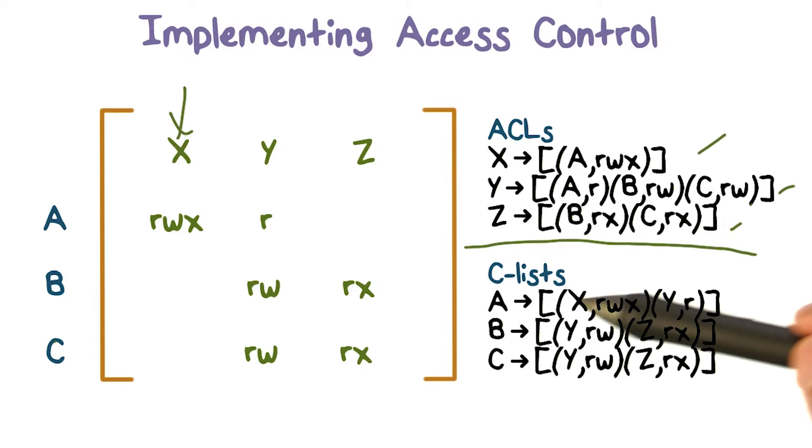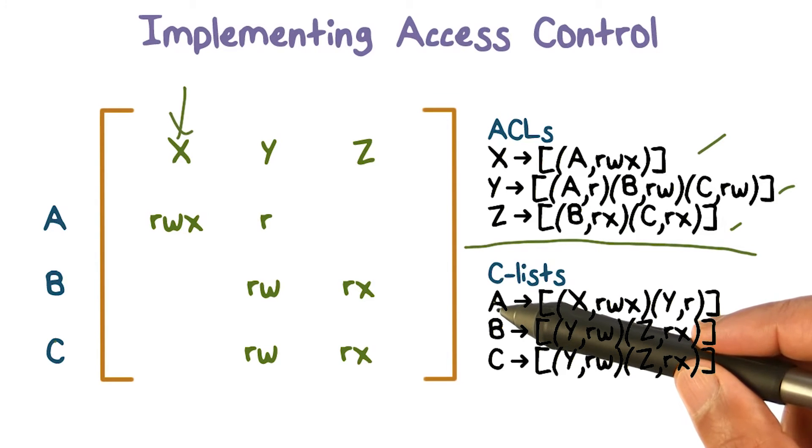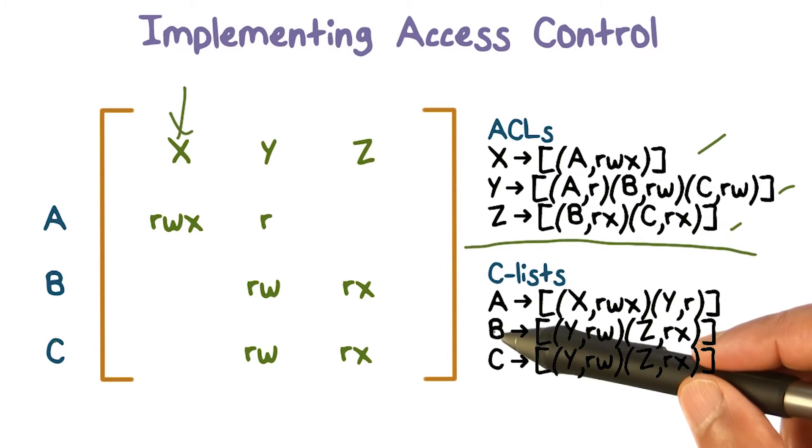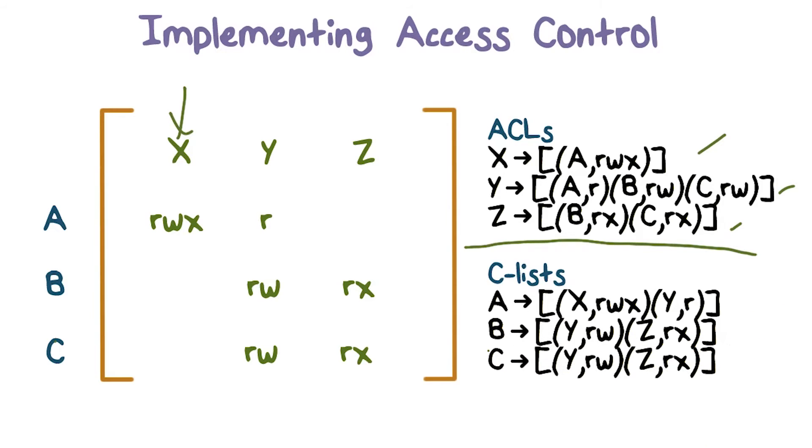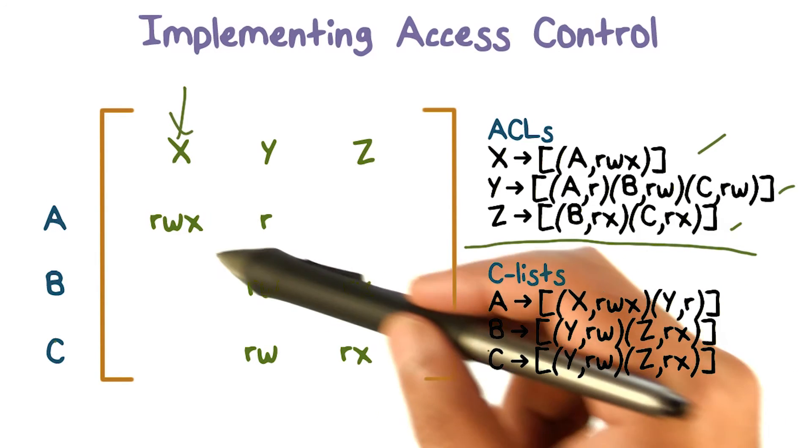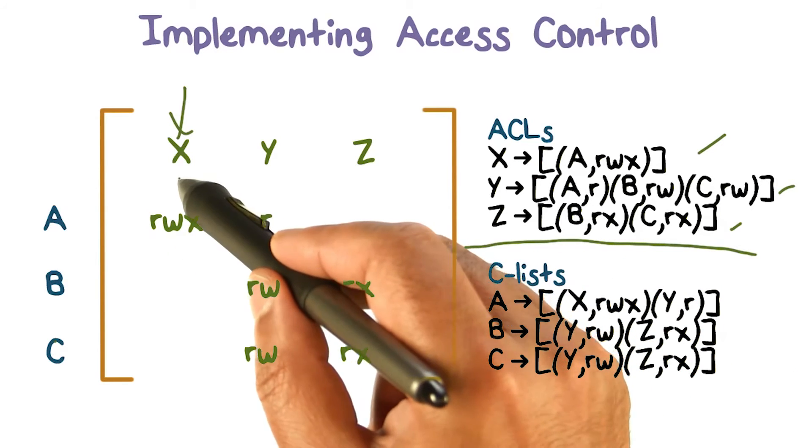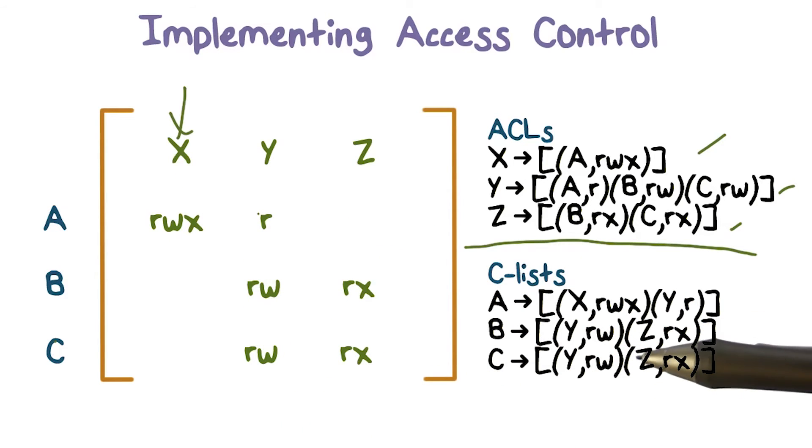Another way to represent this same information is using capability lists or C-lists. C-lists are per user. So we have to have a C-list for A, one for user B, and one for user C. If you look at A, it has access to both X and Y, so the C-list would have two entries.